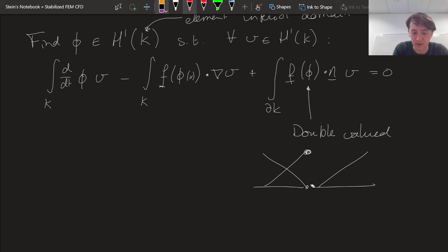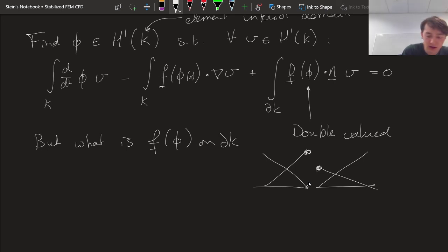we find it has this value. These might be completely different values. So now I'm drawing the same thing, but the idea is that you have two degrees of freedom. So the question is, what is f of phi on partial k? Phi has two values.